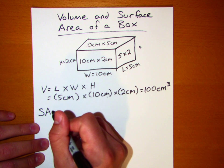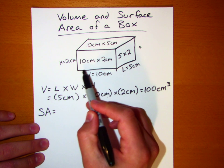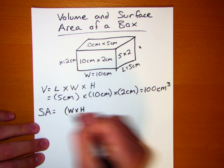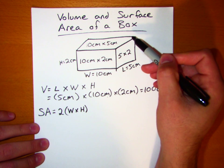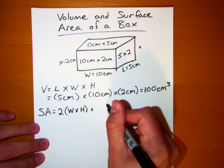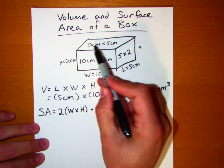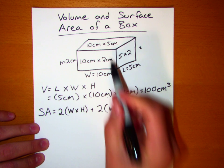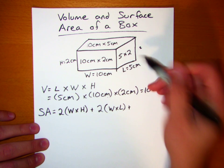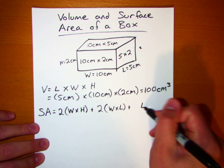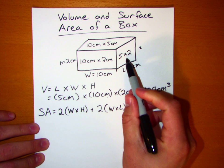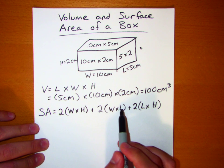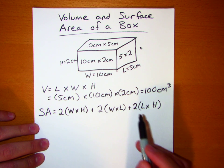So we take those six faces and add them up. There's the front face, which is width times height, multiplied by 2 because there's one in the back. Then the top face, which is width times length, and there are two of those — one on the bottom as well. Finally, there's the side face, which is length times height, and again there are two of them. So a total of six faces on this box.